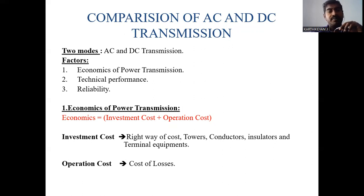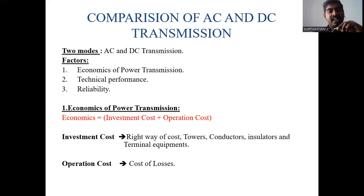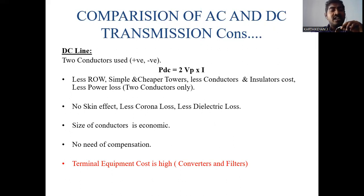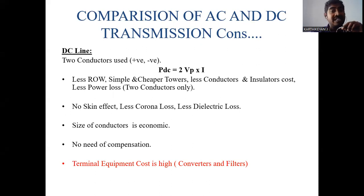There are two modes of transmission — AC and DC. The factors to be considered while transmitting power are: economics of power transmission, technical performance, and reliability. Economic factors include investment cost, operating cost, and conductor cost. In AC transmission, losses include the skin effect, Ferranti effect, corona loss, and magnetic interference. In DC transmission, there is no skin effect, less corona loss, less dielectric losses, and the conductor size is also more economical.